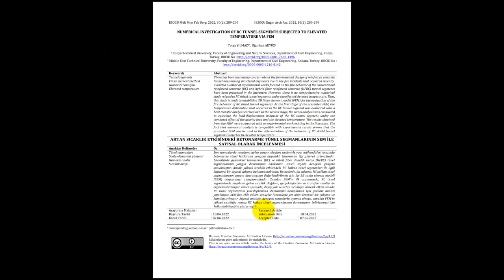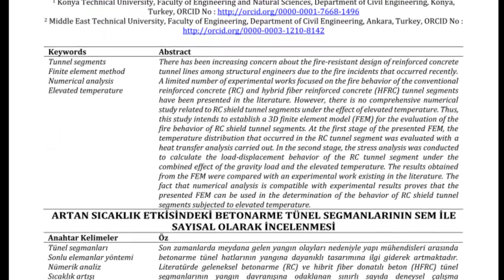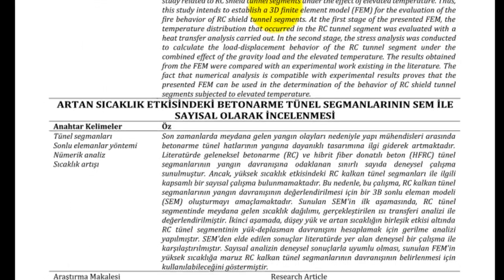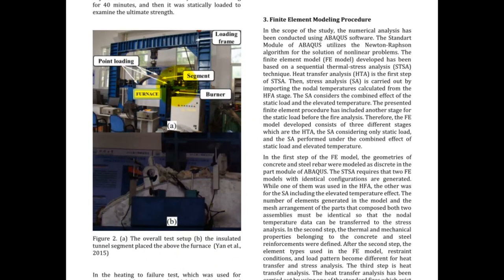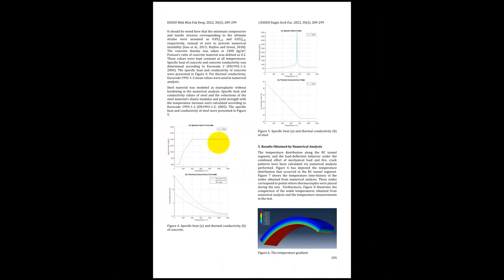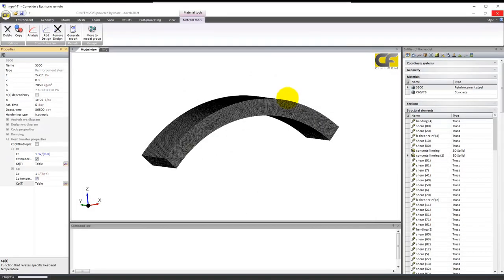This example is based on a paper — a numerical investigation of a reinforced concrete tunnel segment subject to elevated temperature via a finite element model. In this paper, they analyzed this tunnel lining, so we have generated the same model. They applied vertical loads on a segment and then applied temperature on the bottom, analyzing different results and also comparing with another finite element software. What we have done is start with this example, compare several results with the real results obtained, and then go further by analyzing the influence of different boundary conditions.